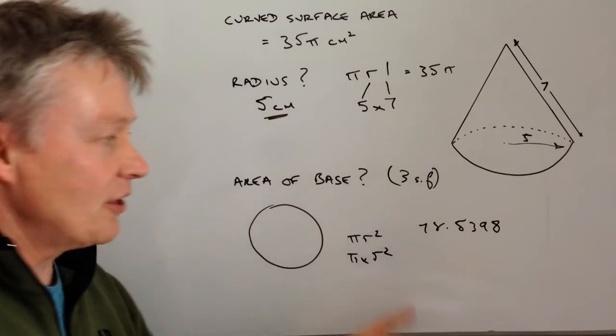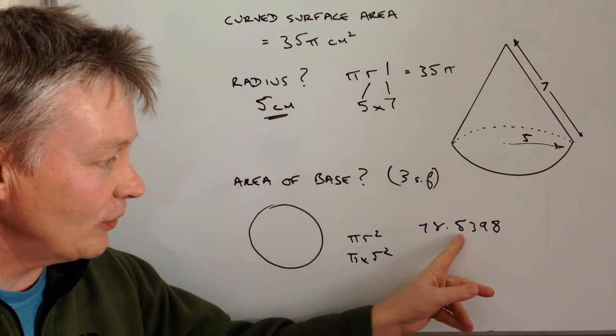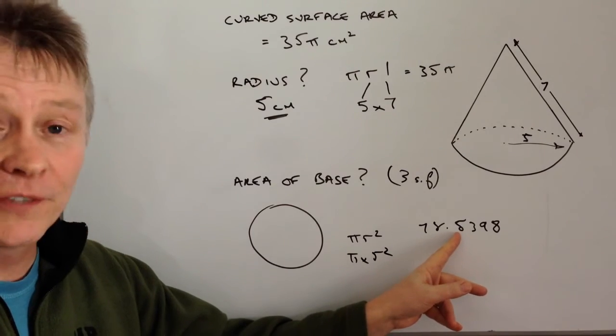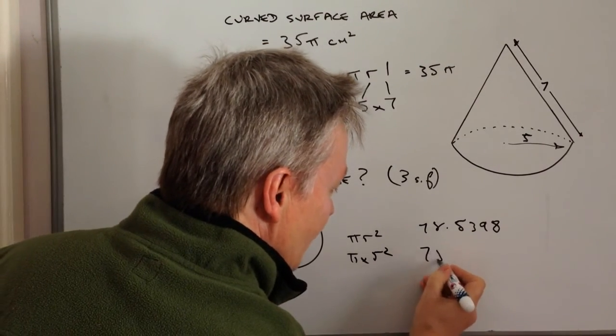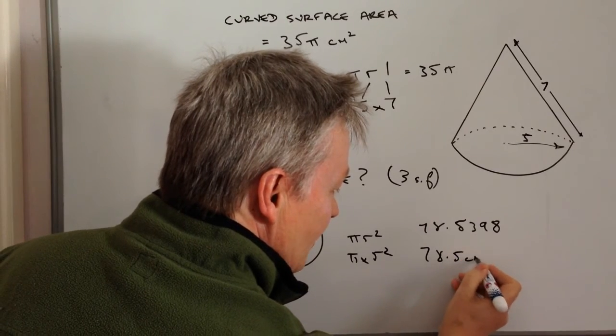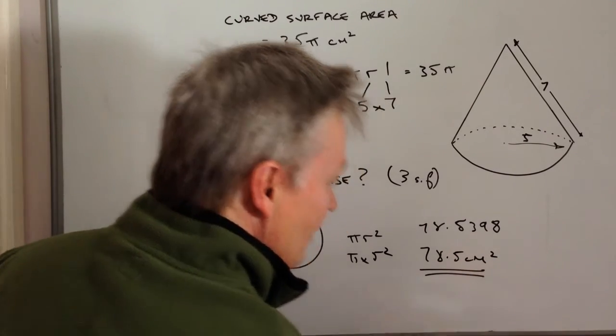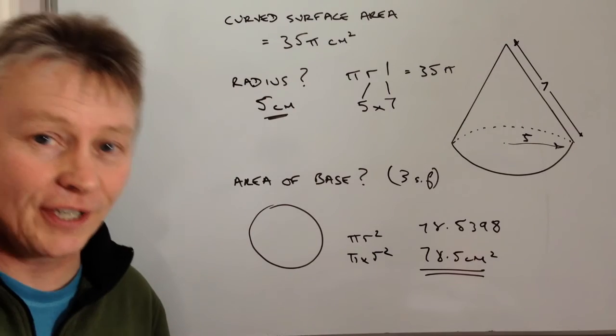Well to 3 significant figures, we look at the first 3 numbers, that 5 doesn't need to change, it's going to stay as it is, so it's going to become 78.5 centimeters squared, and that's our answer to 3 significant figures.